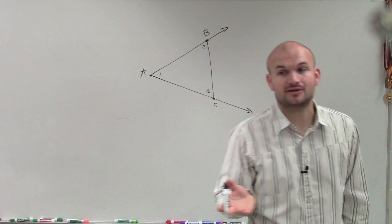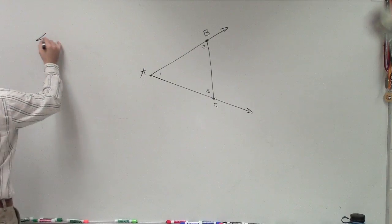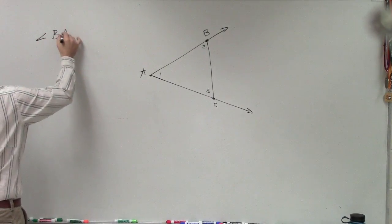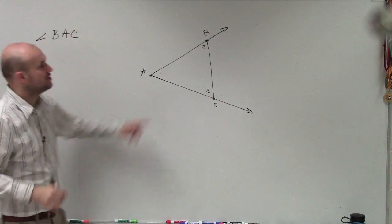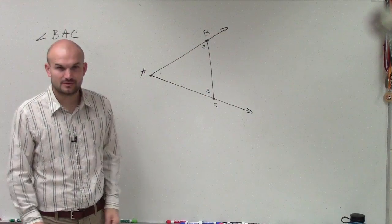One way to label an angle is by labeling it using the three points. So we could say angle BAC. So to go from B to A to C creates an angle.